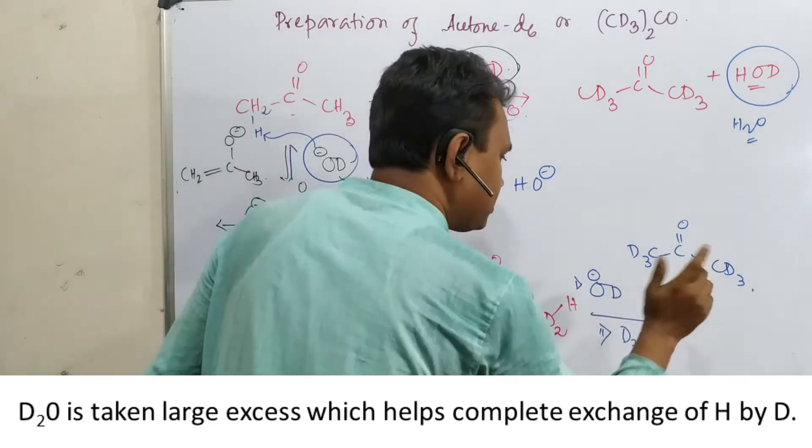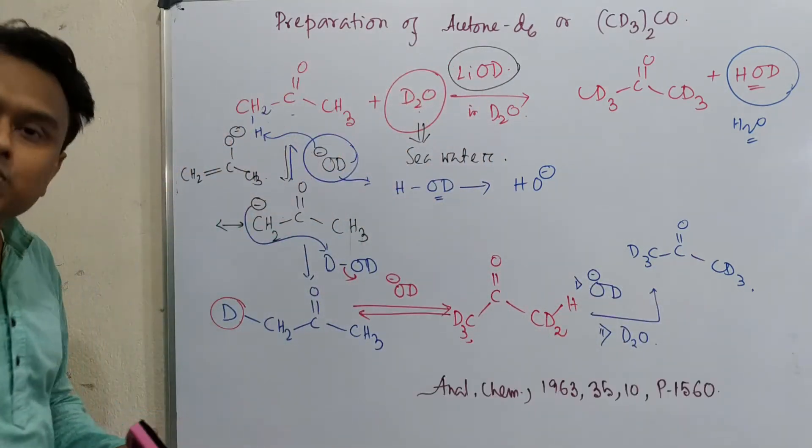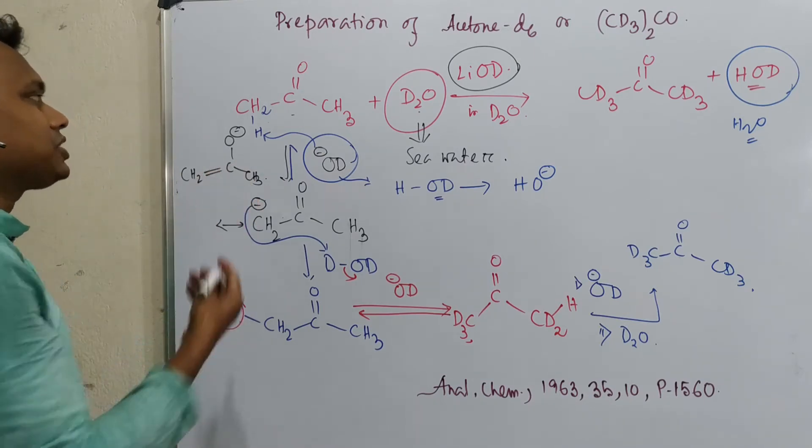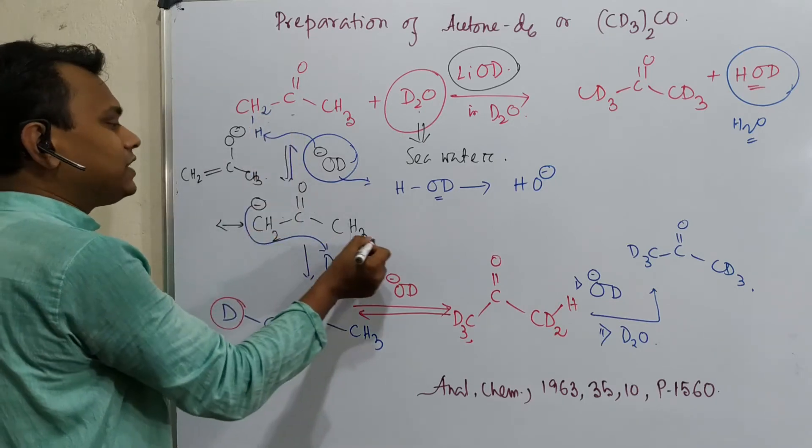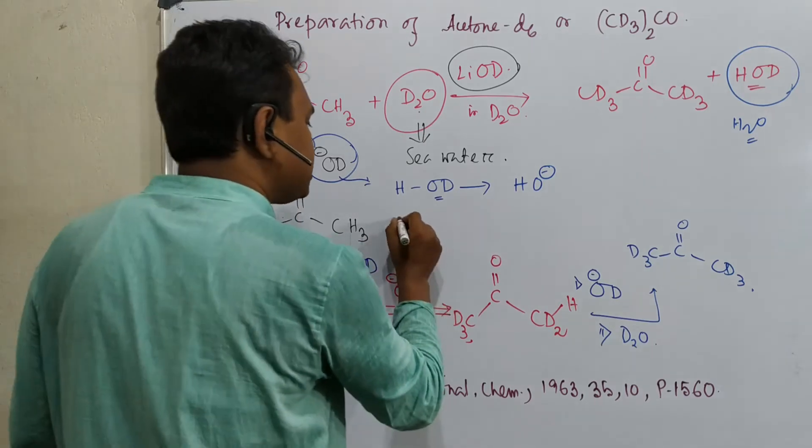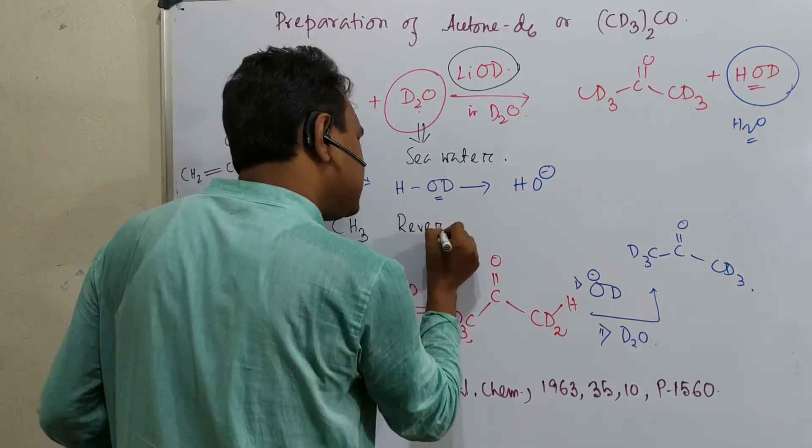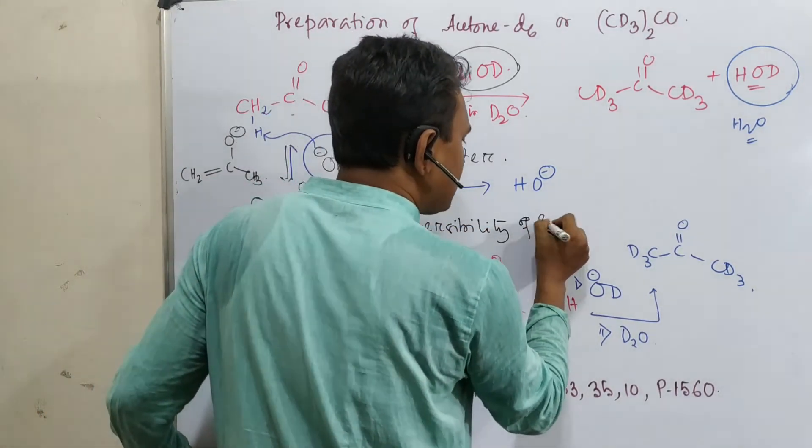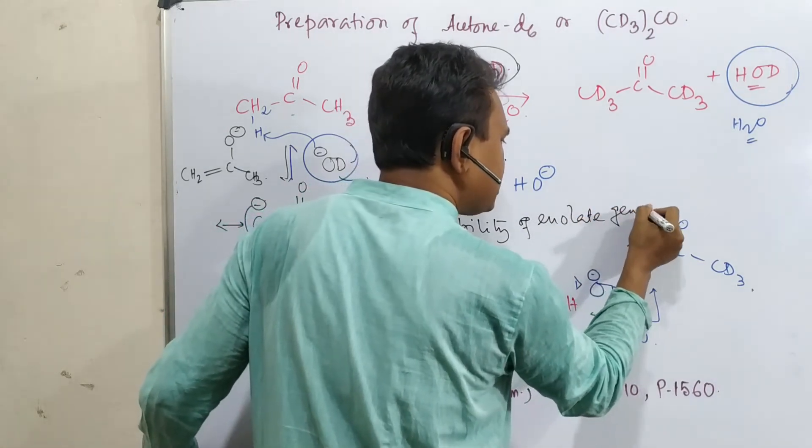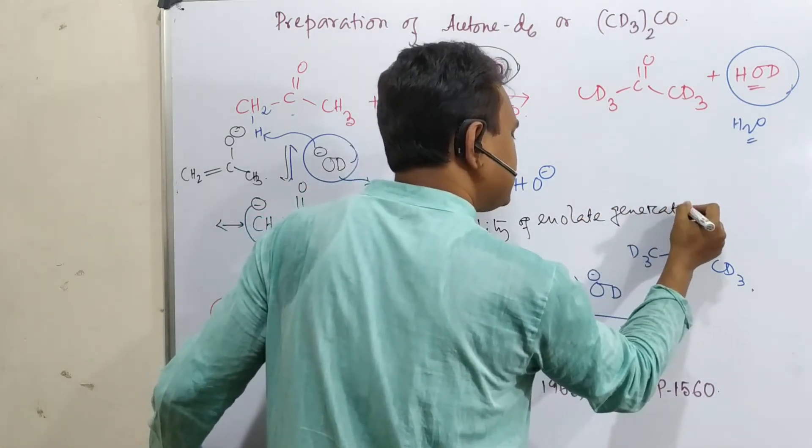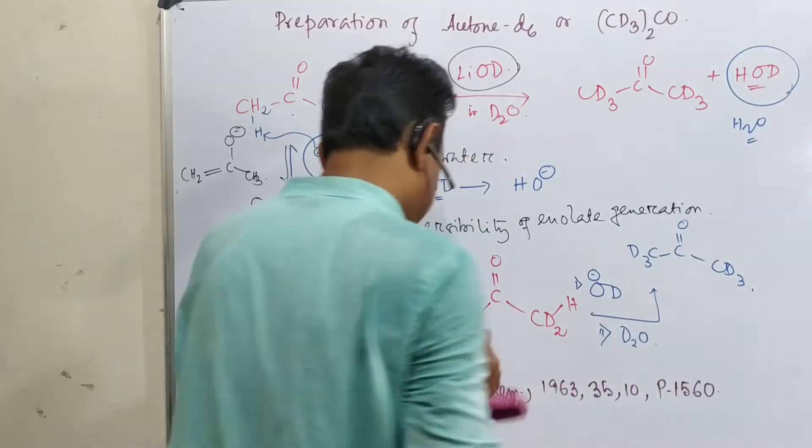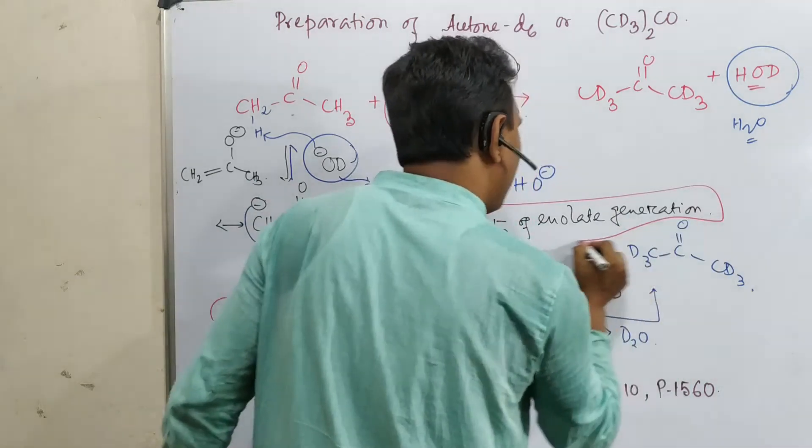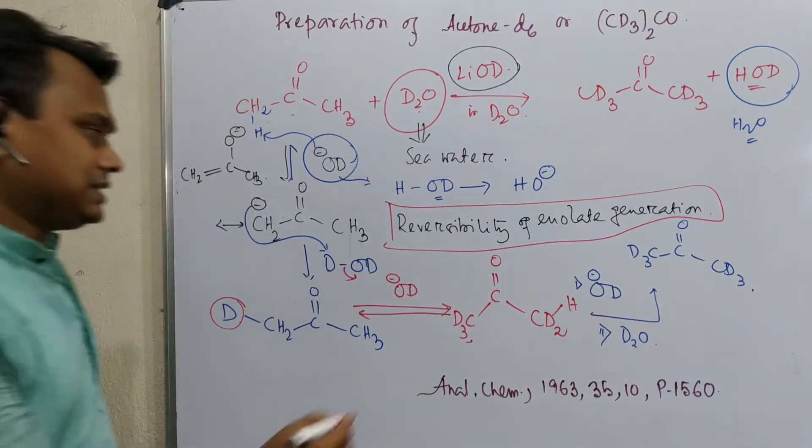So that's how this will be produced. What interesting thing have we learned? The interesting thing, the basic principle behind this reaction is reversibility of enolate generation. Remember, reversibility of enolate generation. That is actually the main guideline principle for this preparation of deuterium acetone.